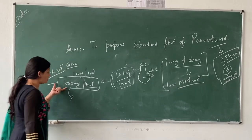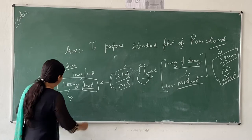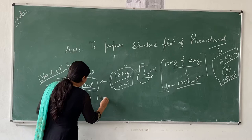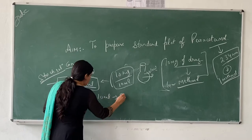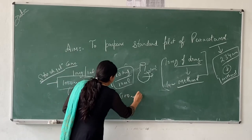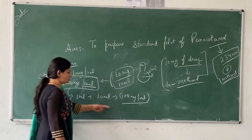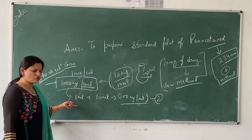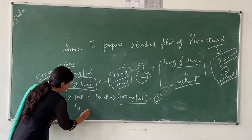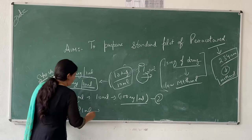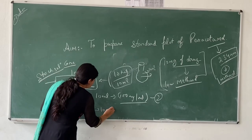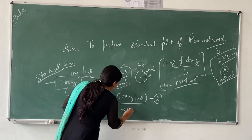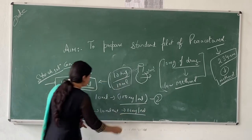So 1 mL of this solvent contains 1000 micrograms of paracetamol, and this is what we call the stock solution. From this stock solution, we have to take 1 mL and dilute it up to 10 mL — it will give us a concentration of 100 micrograms of paracetamol. This is known as the second stock solution. From the second stock solution, we again take 1 mL and dilute it to 10 mL, giving us 10 micrograms of paracetamol.